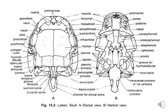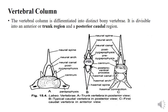Here is the diagram of the skull with the dorsal and ventral view. Next is the vertebral column. The vertebral column is differentiated into distinct bony vertebrae. It is divided into the anterior and posterior regions. The anterior region is the trunk region and the posterior region is called the caudal region.